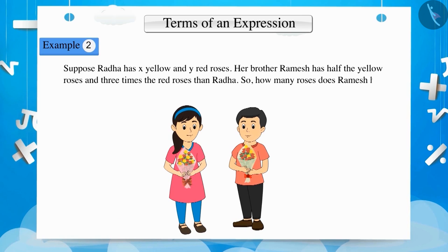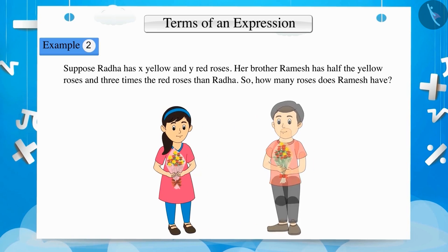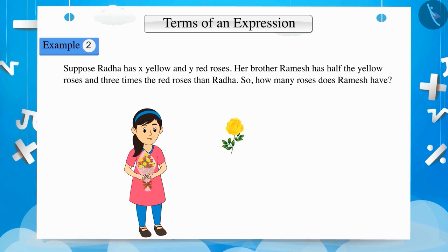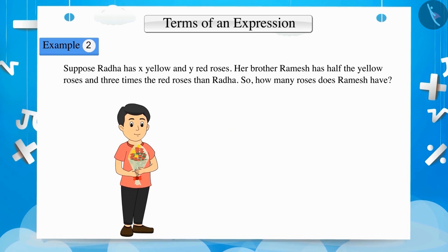To represent the total number of roses Ramesh has, let's form an expression. Radha has X number of yellow roses and Y number of red roses. Now, to know the number of yellow roses Ramesh has, we have to divide X by 2 and to know the number of red roses, we will multiply Y by 3.